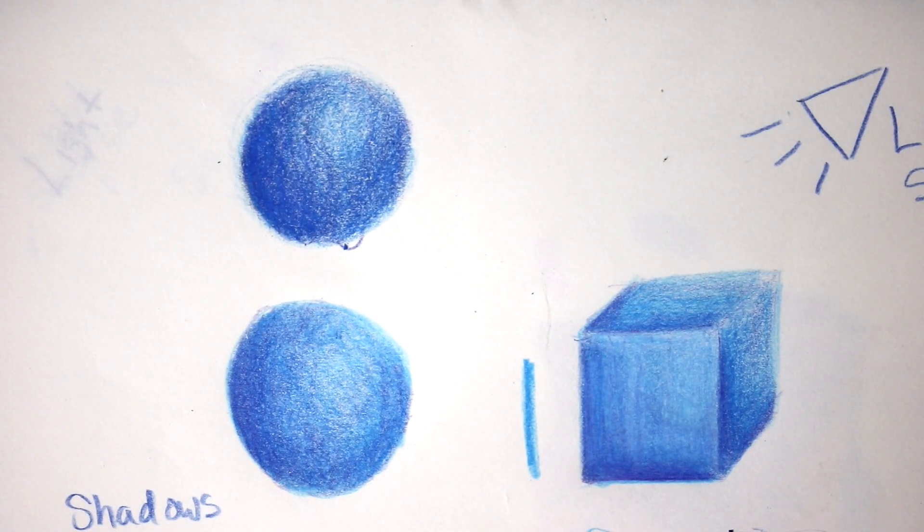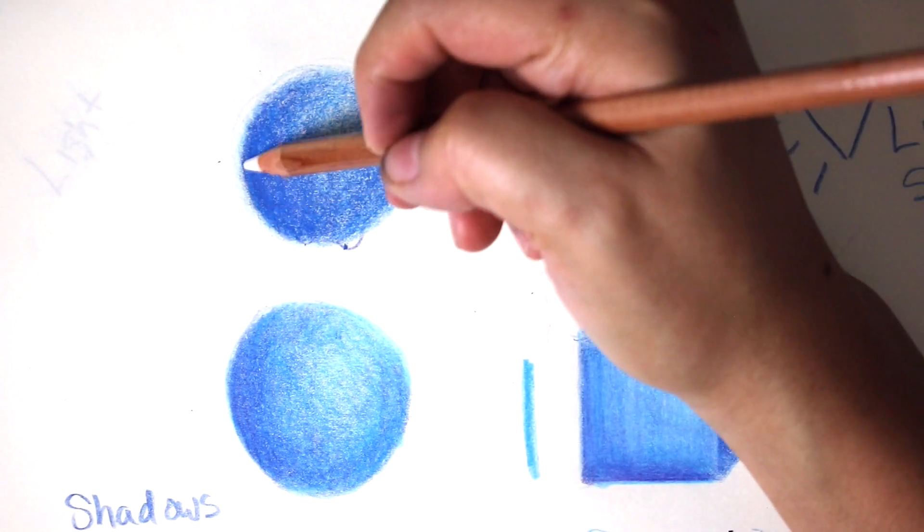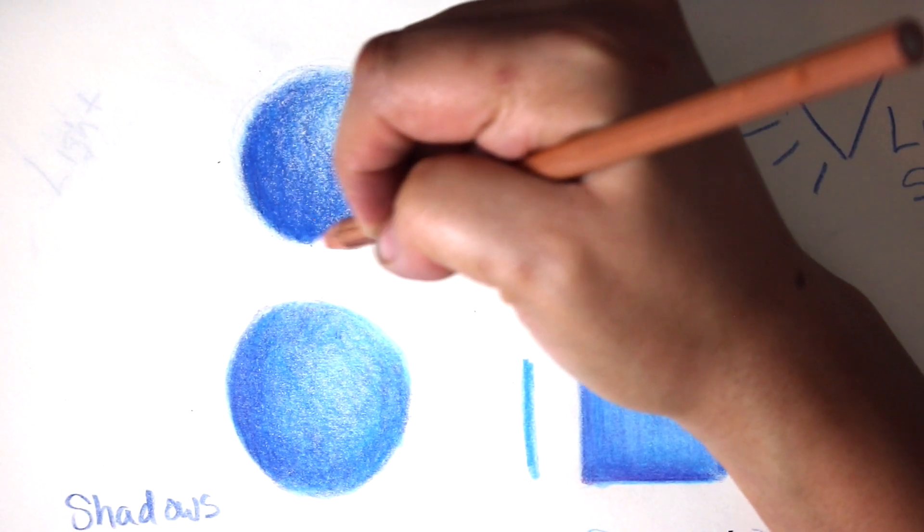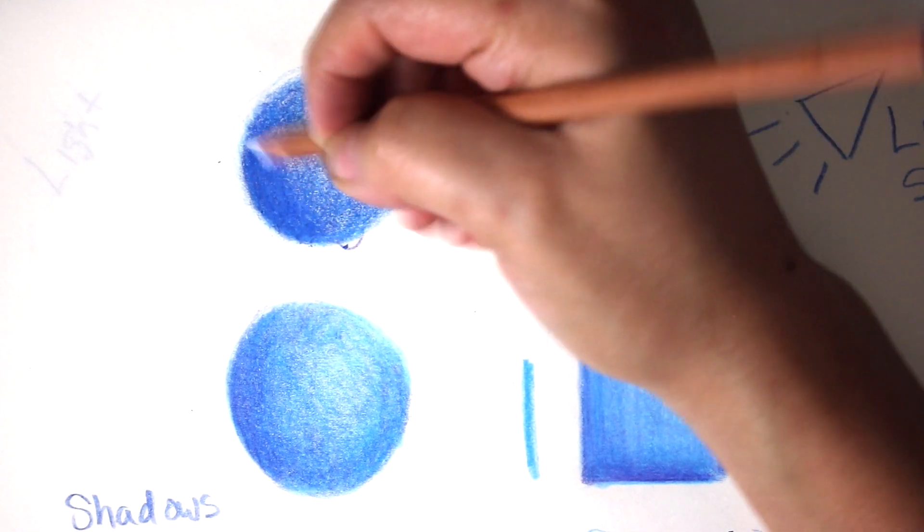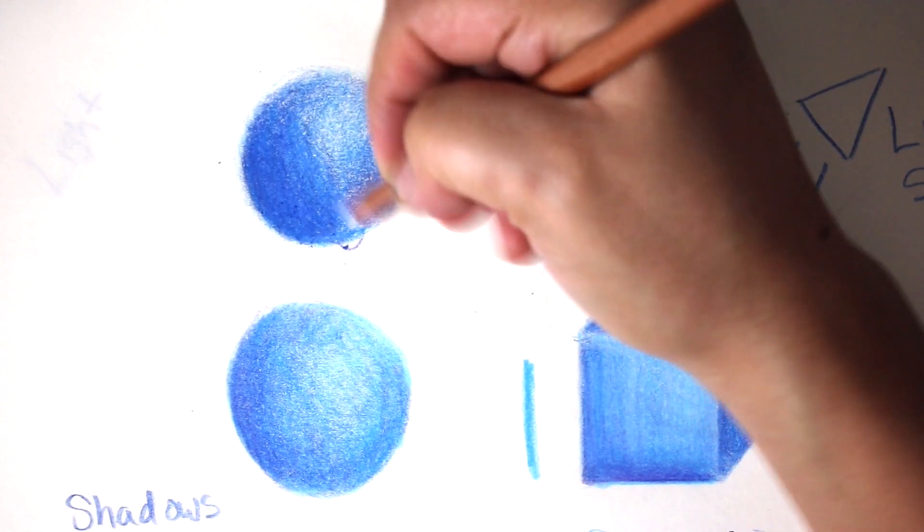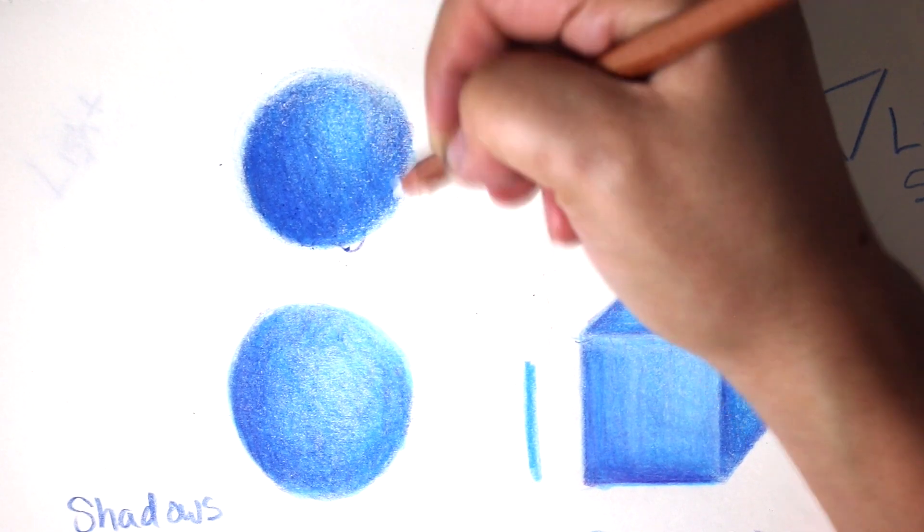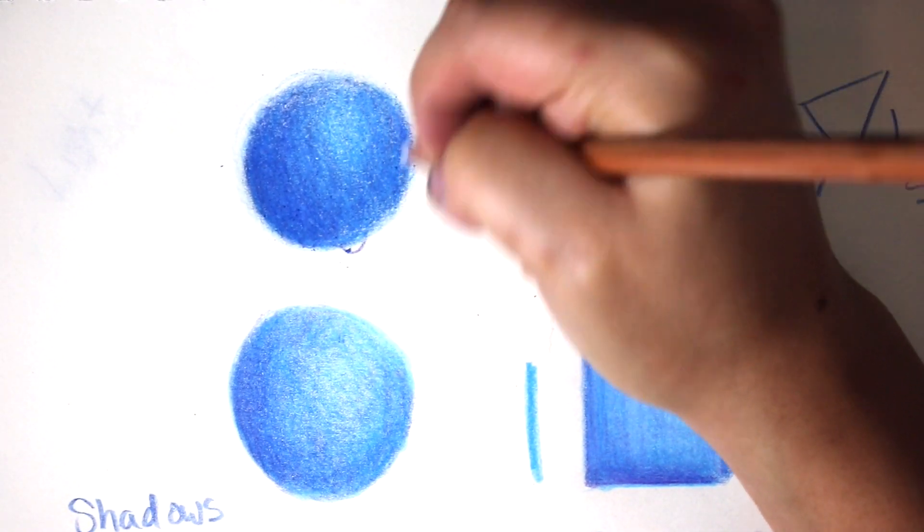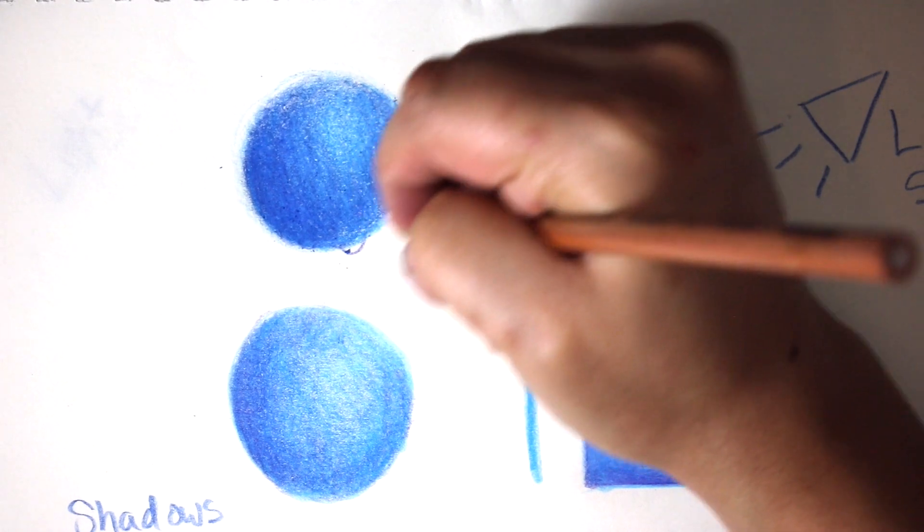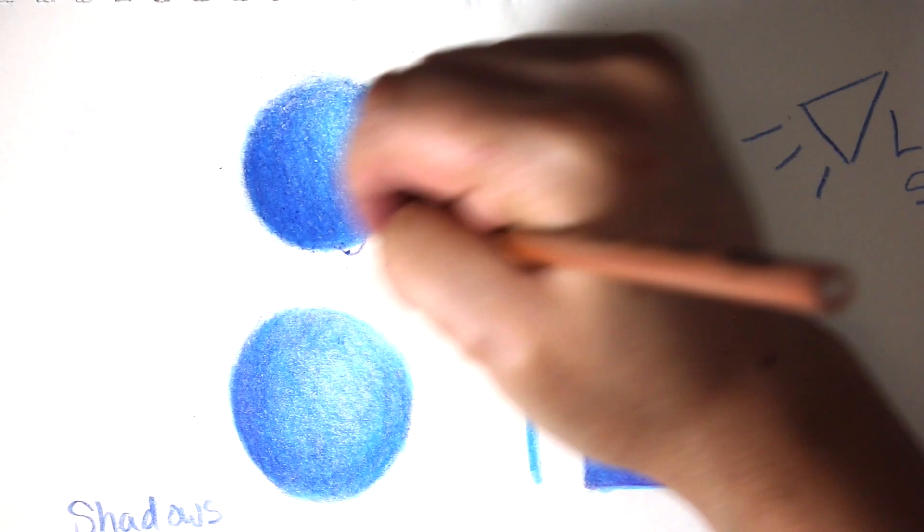Right here what I have is a colorless color pencil, so it has absolutely no color. It's a poly blender, and what it does is pretty much the same thing we did with the white color pencil earlier. This does the same thing except obviously doesn't put any color at all. It completely blends everything together much nicer than the white color pencil would.